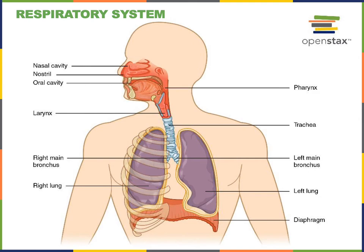Each bronchus branches further into secondary and tertiary bronchi in the lungs, which branch further into bronchioles — small airways that eventually terminate in air sacs known as the alveoli, where external respiration and gas exchange occur. Oxygen moves from the atmospheric air inside of the alveoli into the blood to be transported inside of the red blood cells.